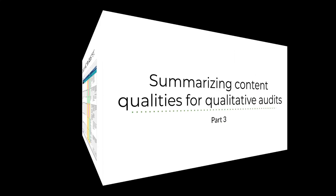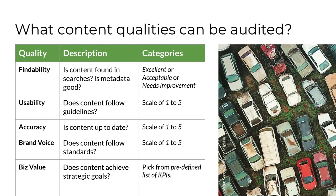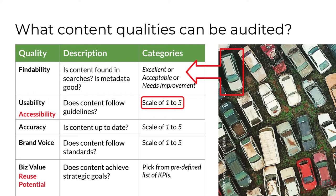At this point, I want to briefly summarize all the qualities I've talked about that can be valuable to evaluate during a qualitative content audit. In the previous lecture, I mentioned five qualities to use for each piece of content. For example, you rate or categorize the findability of each piece of content in your spreadsheet, accessibility as a special form of usability using descriptive categories or numbers, and the reuse potential of each piece of content to increase its business value.